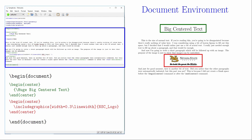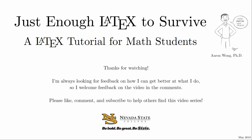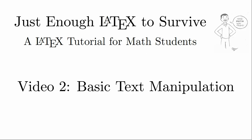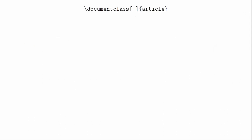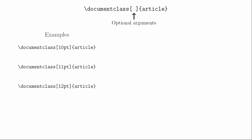In the next video, we are going to focus on different ways we can modify the basic text of a document. The first place we can modify the text is in the document class declaration. Inside of these square brackets, you can put optional arguments. You can set the standard font size to be 10, 11, or 12 point font. The default is 10 point, which I think is best. This isn't the only way that we can impact the size of the font — this just sets the default font size.